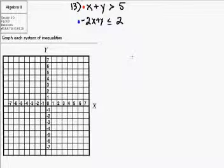All right, on problem 13, here I have two inequalities. x plus y greater than 5. The second inequality is negative 2x plus y, less than or equal to 2.